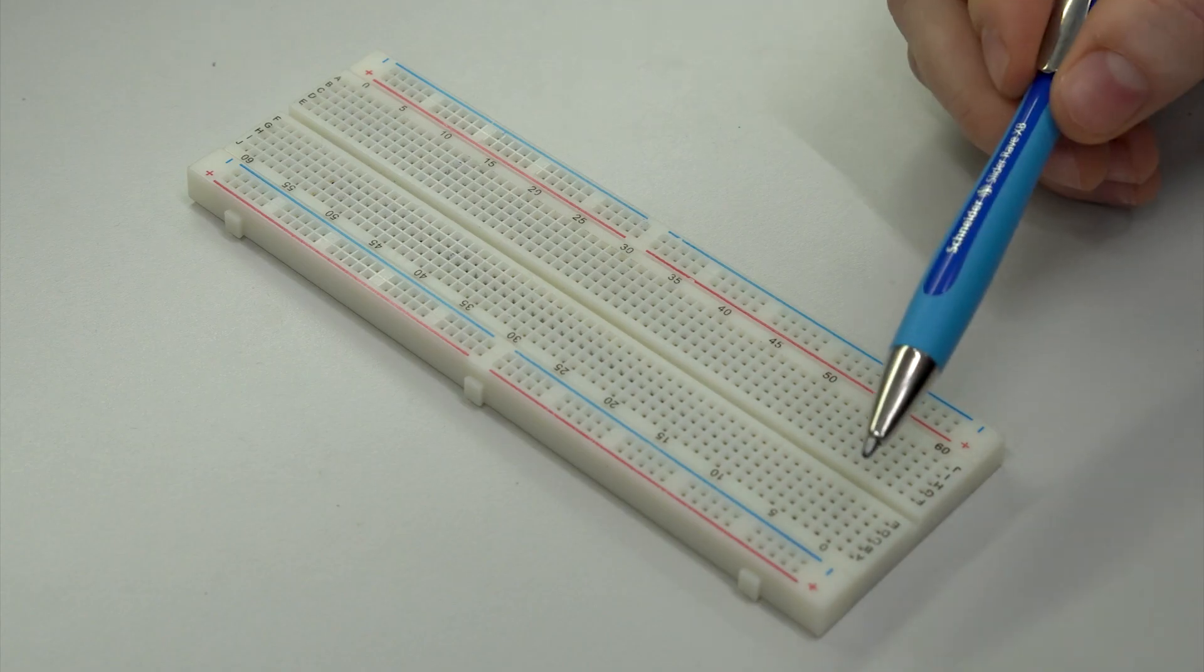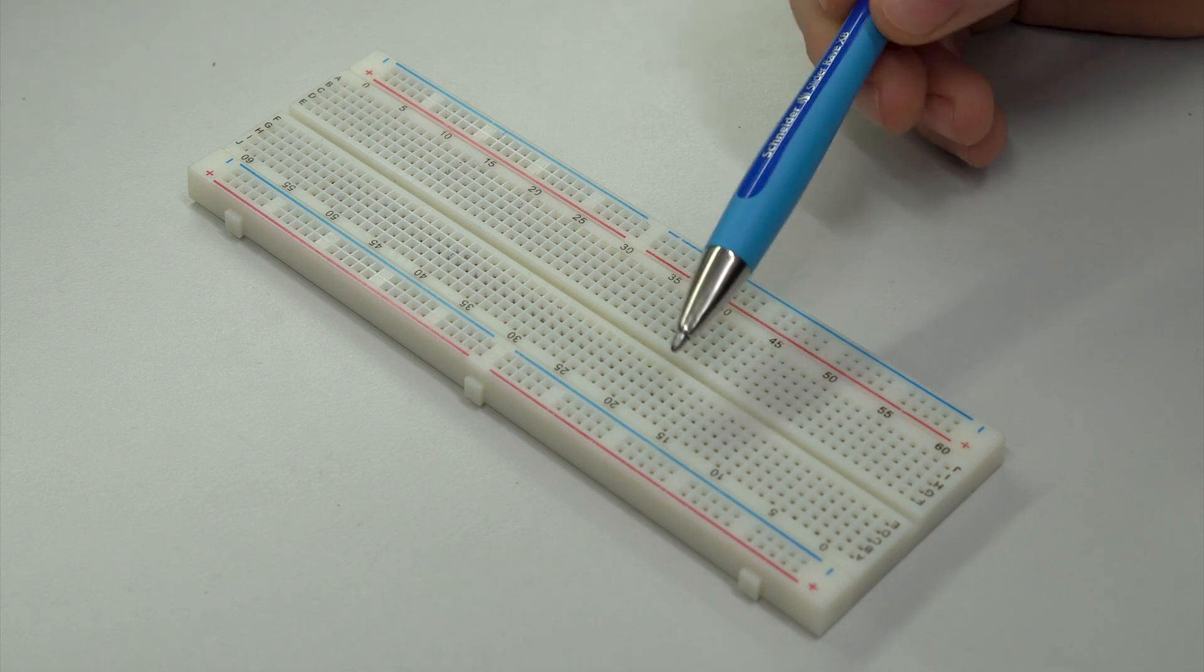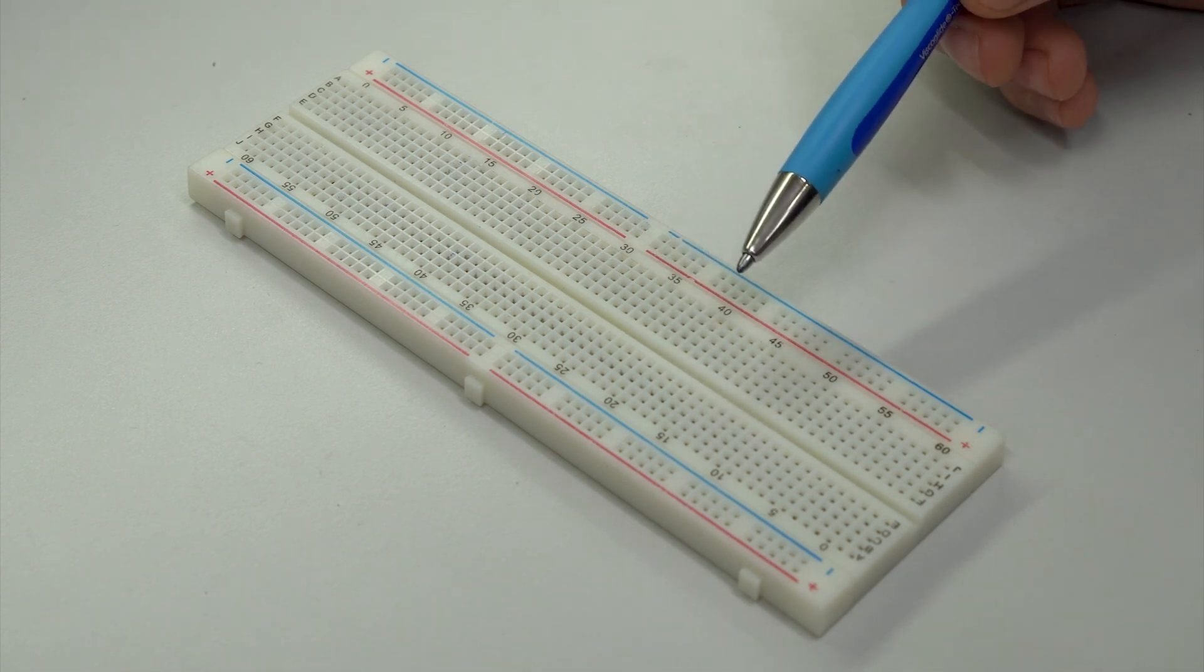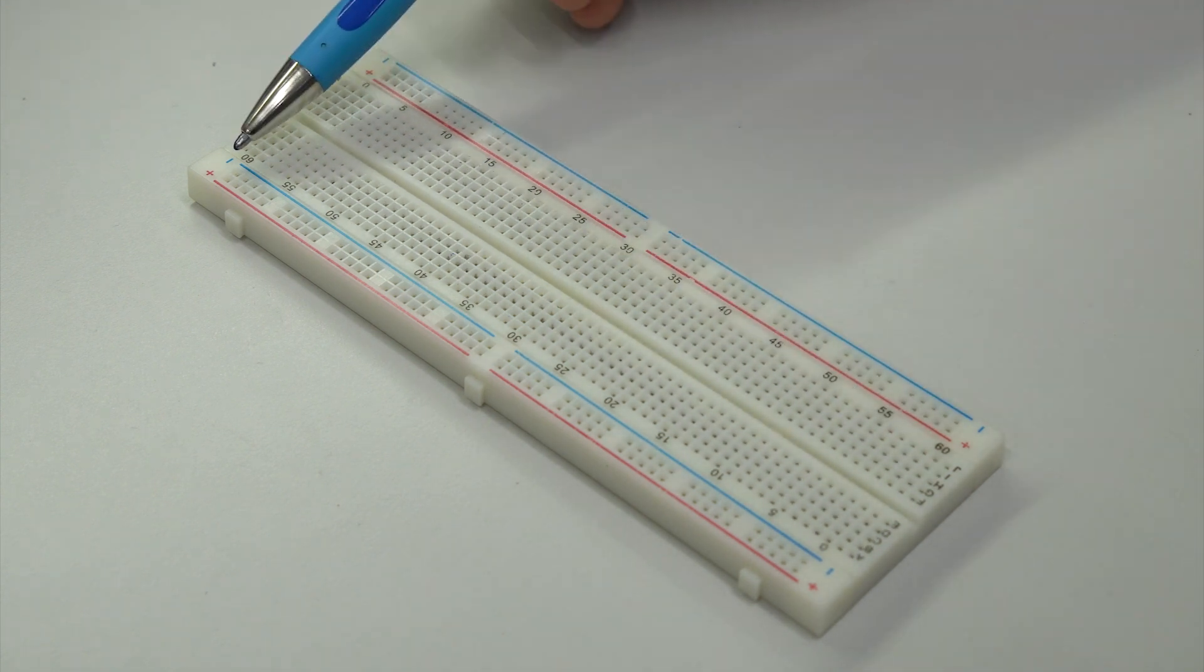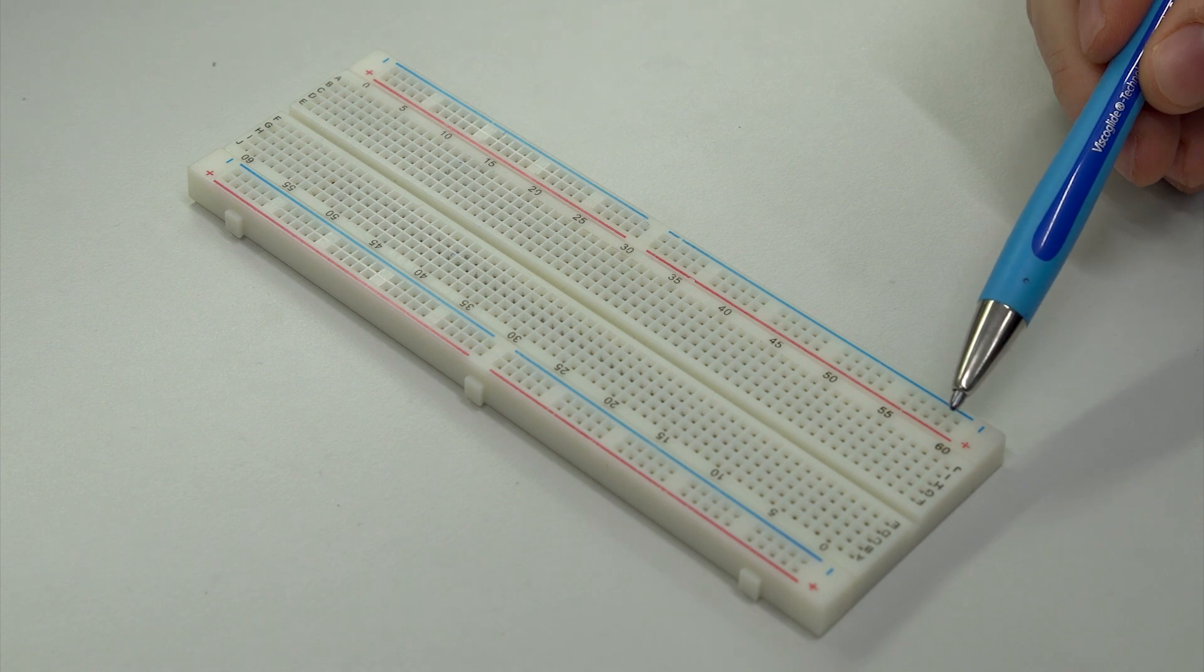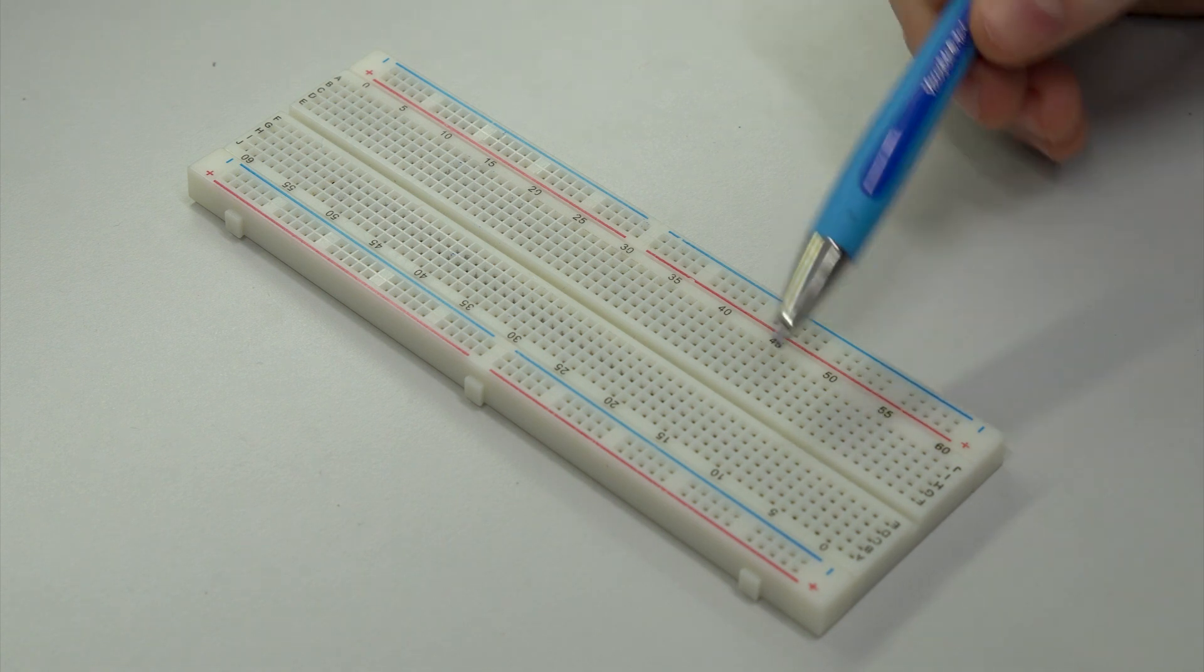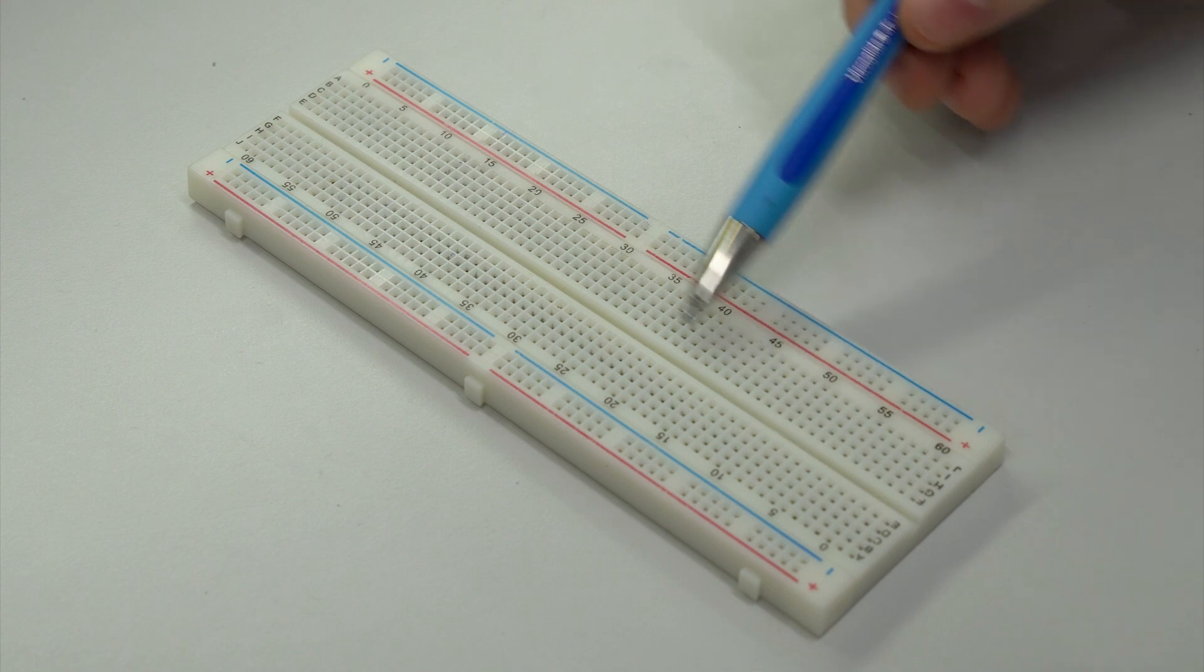Now let's have a look at the basic structure of a breadboard. Usually we can differ between two areas on a single breadboard. One area is for the voltage supply—this is this area here and the area down here. The other area is for the circuit itself. This is where all the components should be placed.